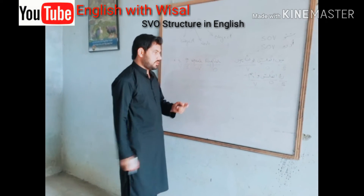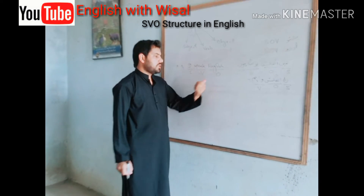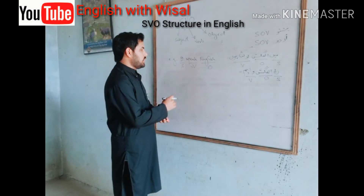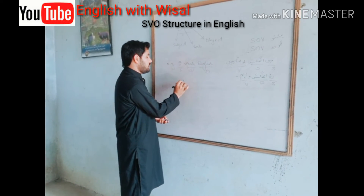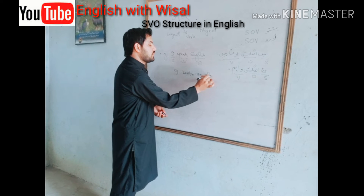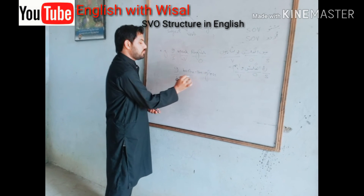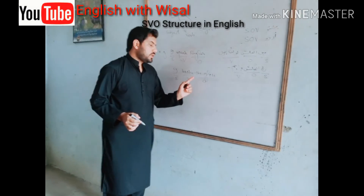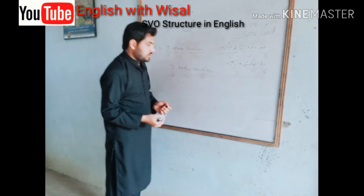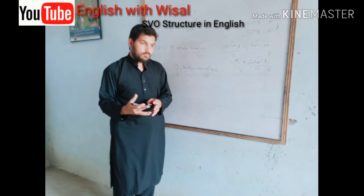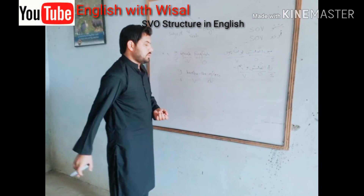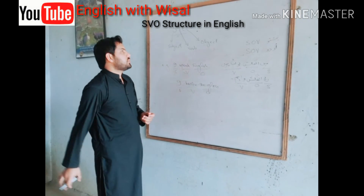Last but not least, that is the object. What is object? The object is the receiver of an action. If I say another sentence: 'I broke the glass.' In this sentence, 'I' is the subject, 'broke' is the verb, and 'the glass' is the object, because it receives the effect of the action — the glass was broken. That is why we call it the object. So this was all about subject, verb, and object — the English structure.